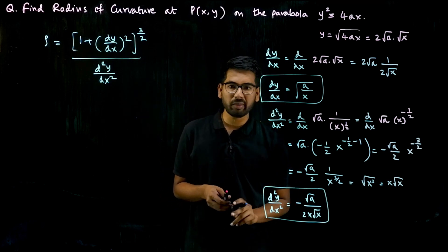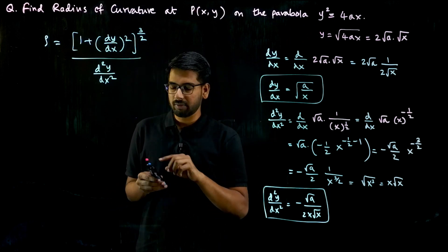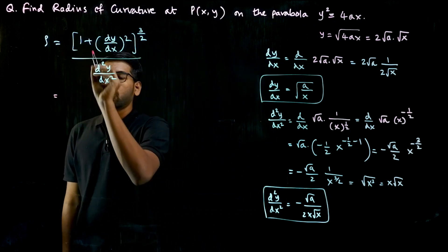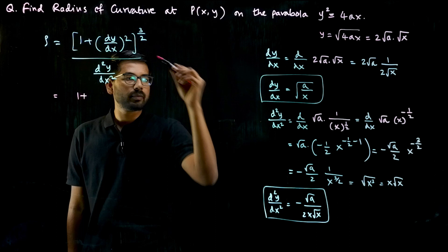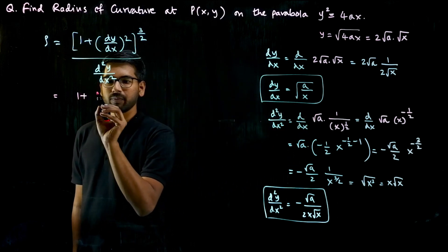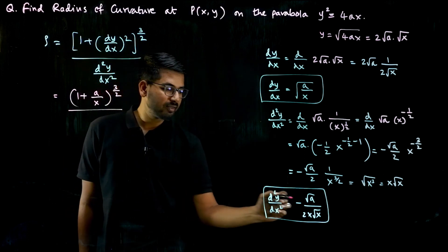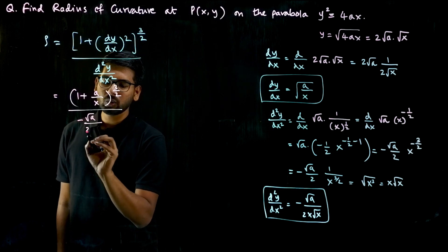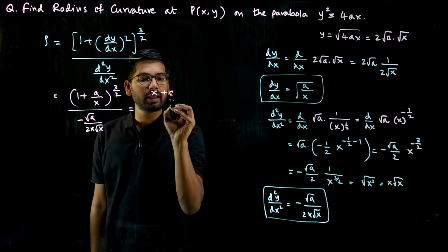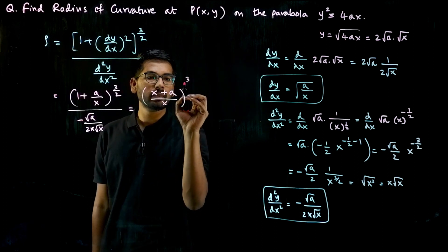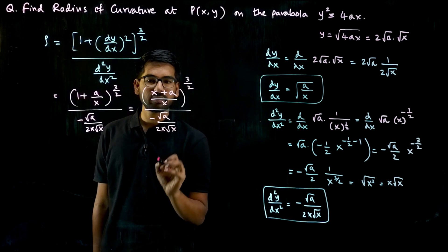Now we have dy/dx and d²y/dx² for the parabola y² = 4ax. Substituting into the formula: the numerator is (1 + (√(a/x))²)^(3/2) = (1 + a/x)^(3/2). Taking LCM gives ((x+a)/x)^(3/2). The denominator is −√a/(2x·√x).